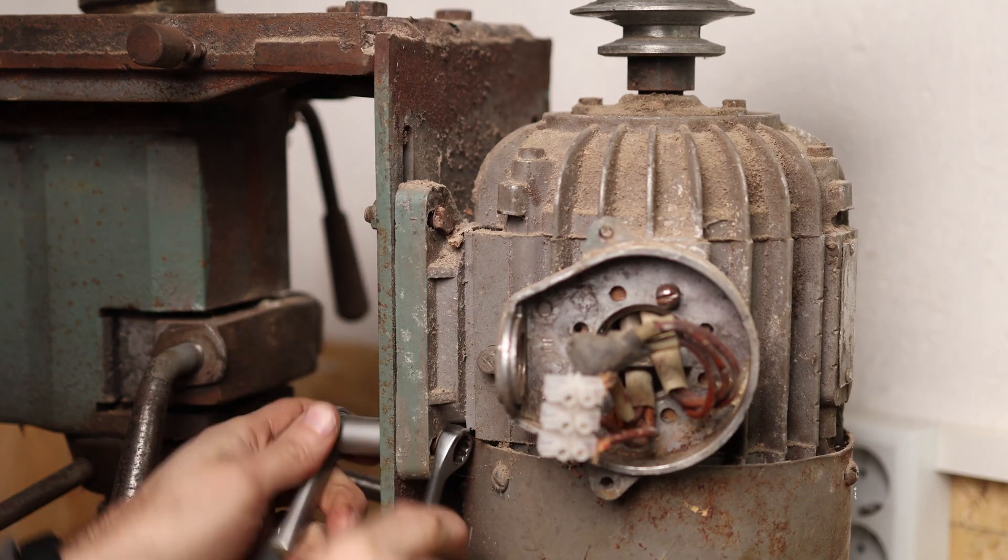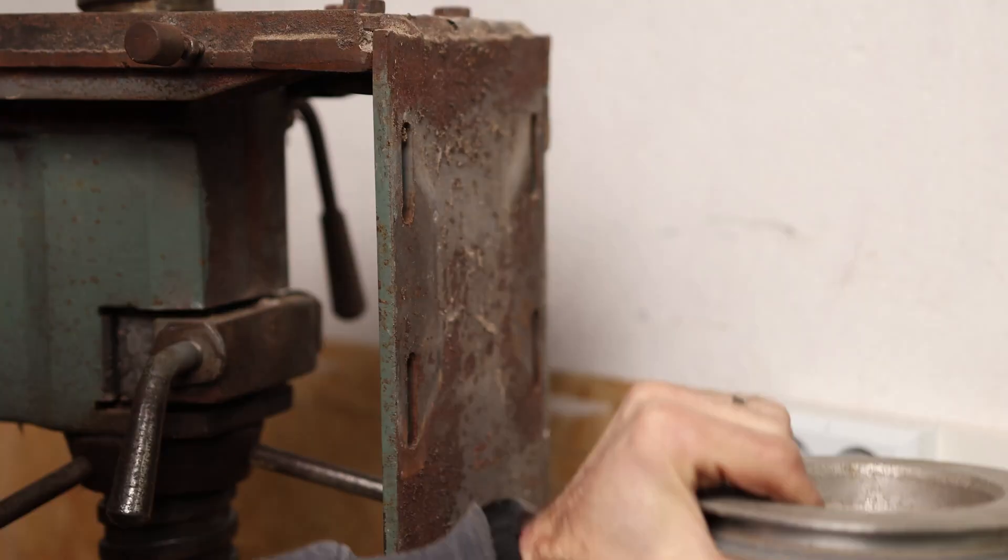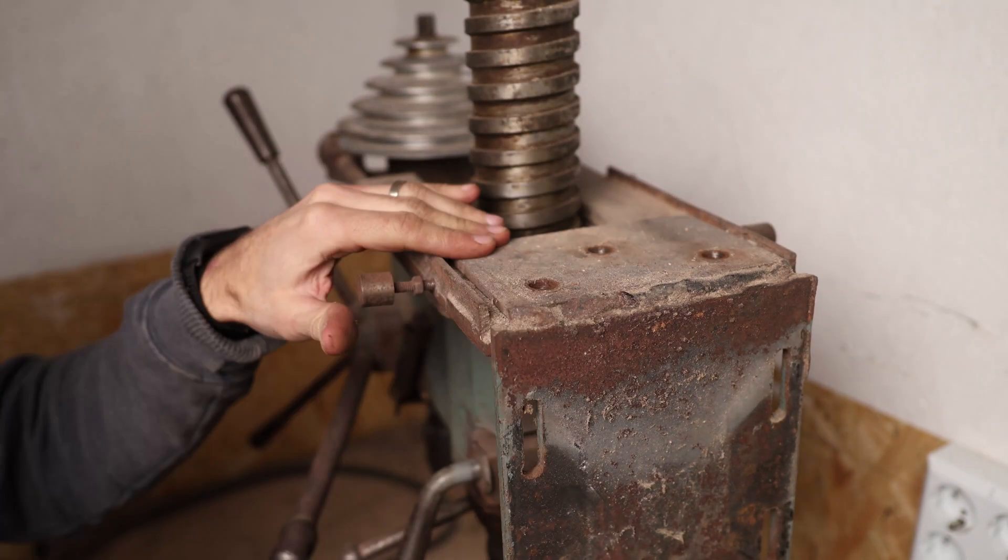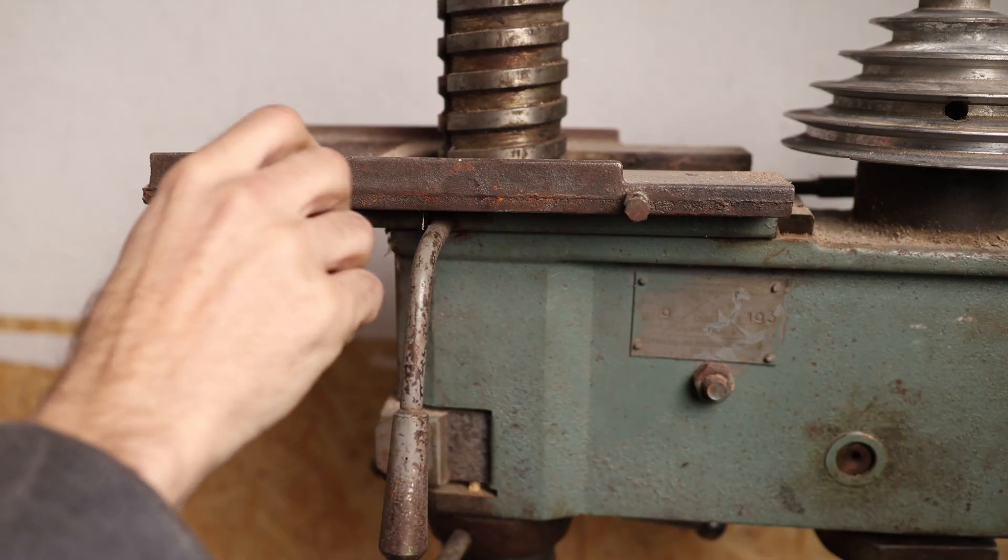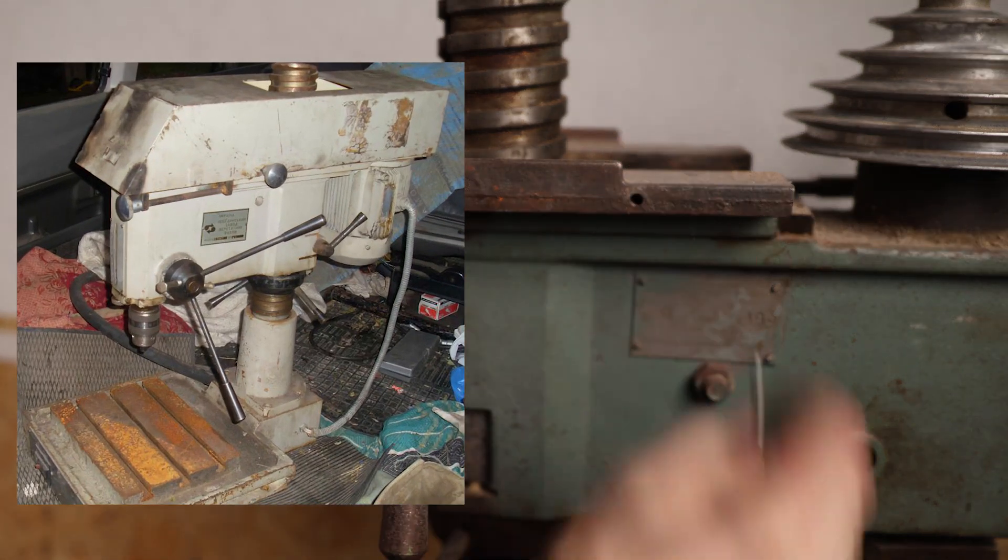I will start by removing motor and motor bracket. Someone made this bracket to be able to attach another type of motor. These bolts are for belt cover, but I don't have it, so I don't need them.